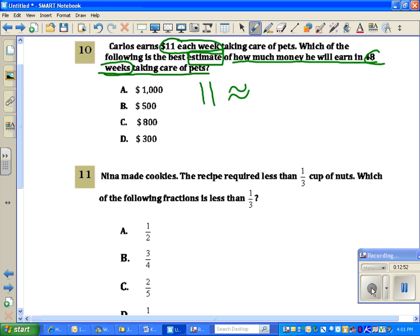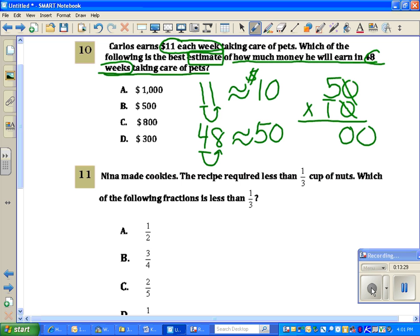So $11, I'm going to round to the last place value. $11 is going to estimate to $10. 48 weeks is going to round to 50 weeks. And so if he gets $10 each week for 50 weeks, that means I'm going to multiply 50 times 10. Much easier problem now. I'm going to scratch 1, 2, match 1, 2, and multiply 5 times 1, $500. And I believe that is choice letter B.